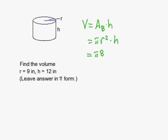Let's substitute. We get pi times r squared, which is 81, times 12, which is the height.